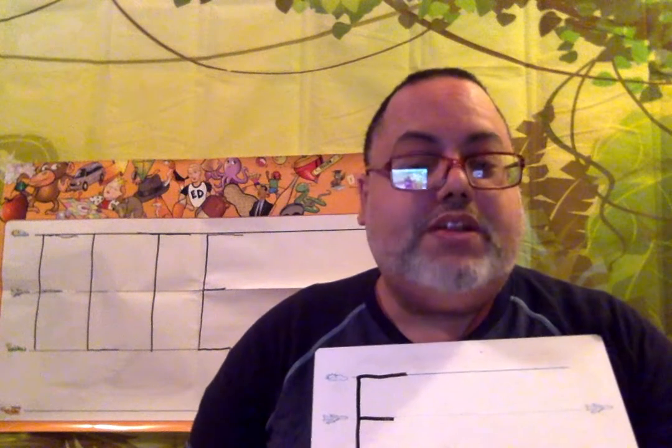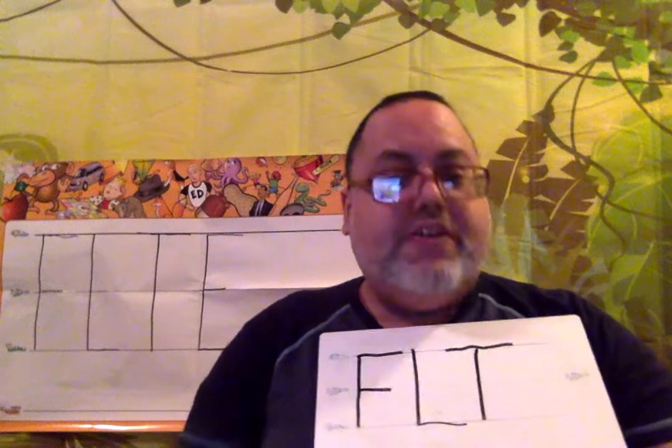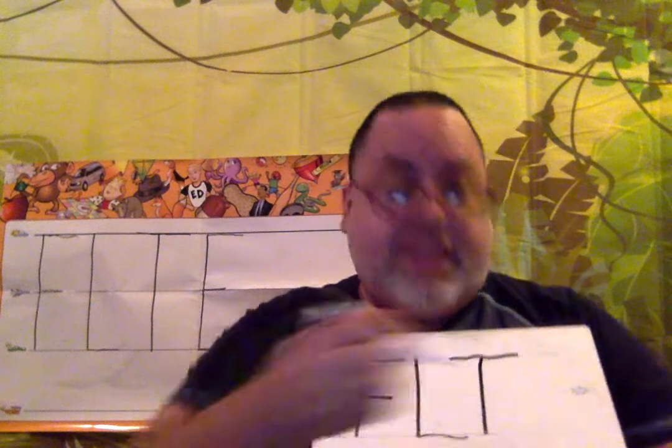Let's start with the F. Point to the sky, come down to the grass, pick your marker up, go across the sky and the plane line. Let's erase that a little bit. Now we're doing the L — point to the sky, come down to the grass, and go across on the grass line. Next one, letter T — point to the sky, come down to the grass, and go across the sky line. And the letter E — point to the sky, come down to the grass, pick your marker up, and go across on the sky, on the plane, and on the grass line.